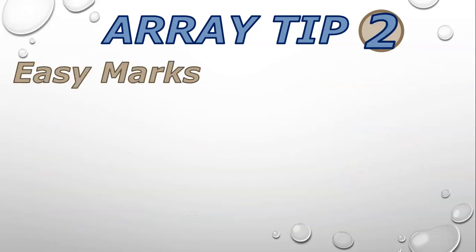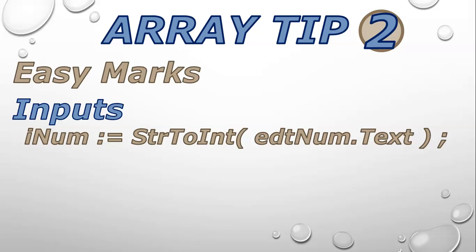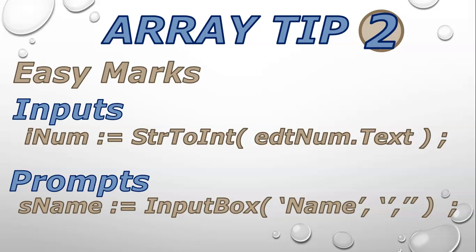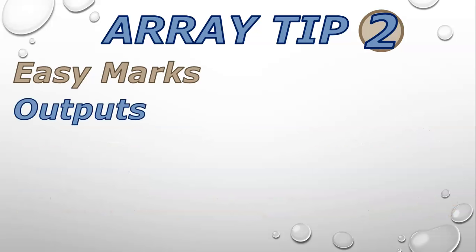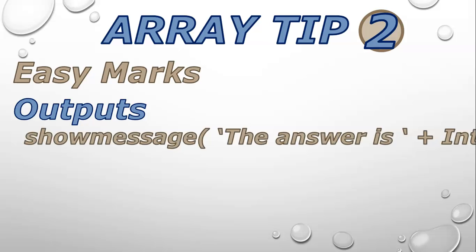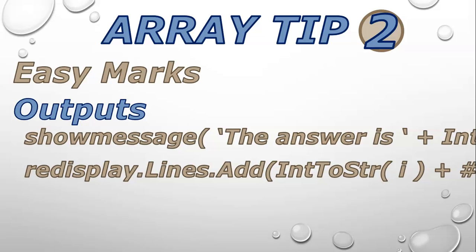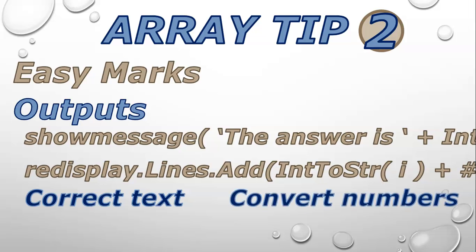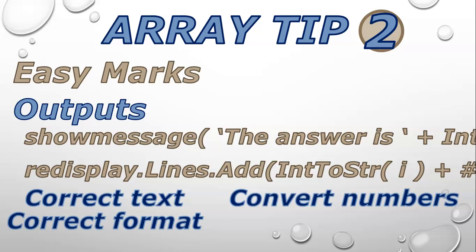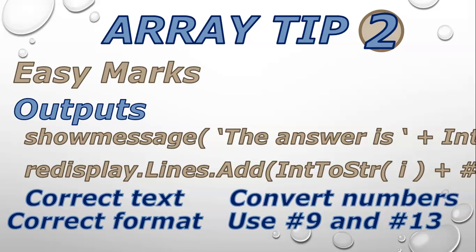Array tip number two: there are easy marks in the array question which have got nothing to do with arrays — make sure that you get them. For example, the inputs: if they're asking for values from edit boxes or spin edits, make sure you do the inputs correctly. If they ask you to prompt the user for a value, make sure you use the input box. For outputs, if they want something displayed in a show message or rich edit, add that line of code. Make sure you include the correct text, convert numbers correctly using IntToStr and FloatToStrF, and format values correctly using hash 9 for tabs and hash 13 for new lines, exactly like the diagram in the question paper.